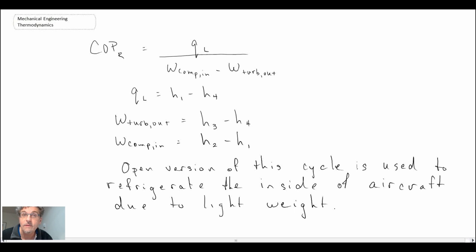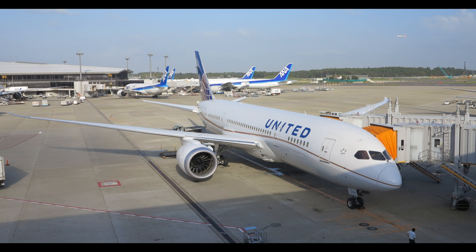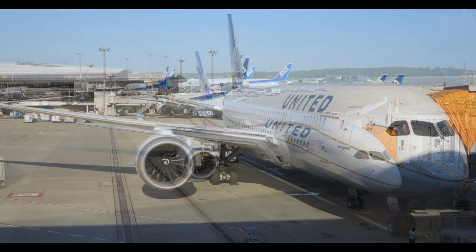What happens is bleed air is taken off of the compressor, so it'll be hot due to the compression process, and it is then conditioned with air that is taken from the outside atmosphere. The mixing of the air and the inlet of the air from the outside is visible in a couple of clips here of aircraft.